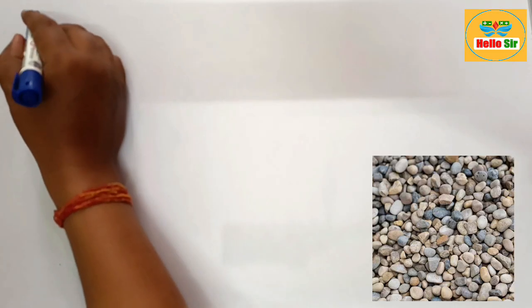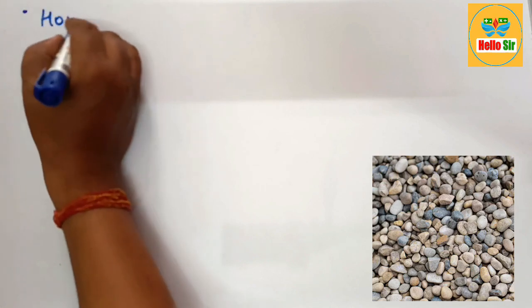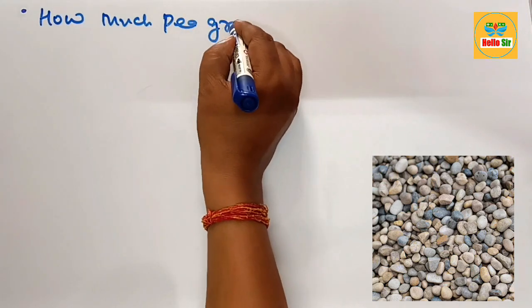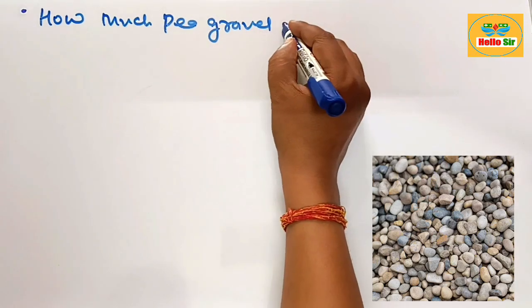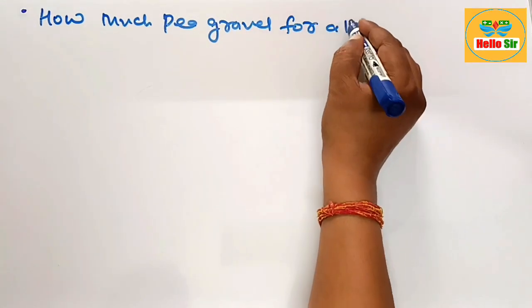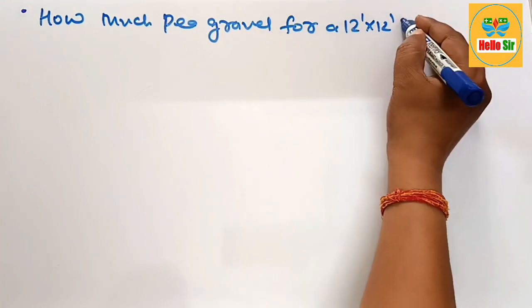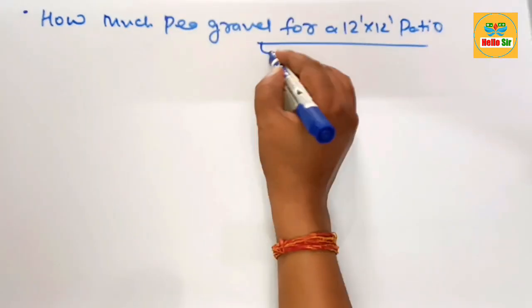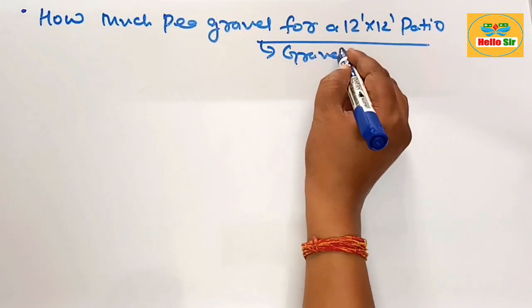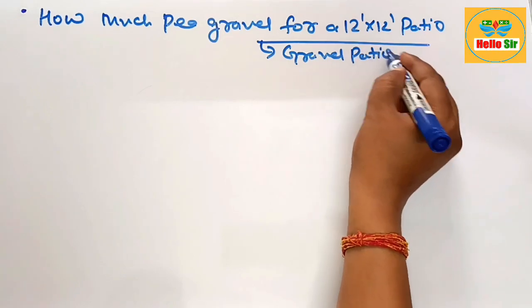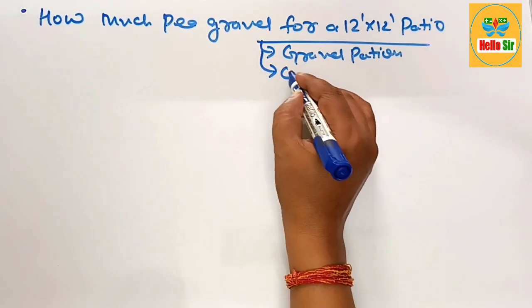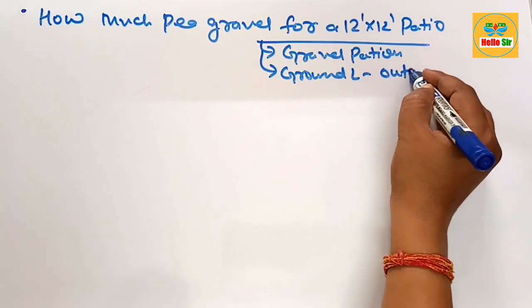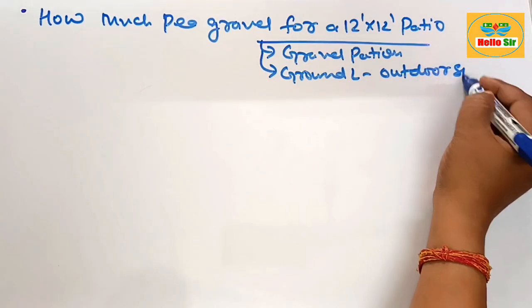Hi guys, today in this video you'll know about how much pea gravel do I need for a 12 foot by 12 foot space. You have to build the gravel patio that is ground level outdoor space and it is attached or detached from your home.